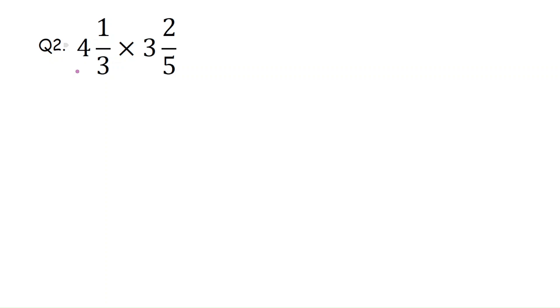Let's solve question number 2. First convert the mixed fraction to improper fractions. How we can convert? First multiply the whole number to the denominator, that is 12, and add to the numerator, that is 13, by write the denominator. Multiply the whole number and denominator, that is 15. 3 times 5 is 15, add to the numerator, that is 15 plus 2 is 17 by 5.